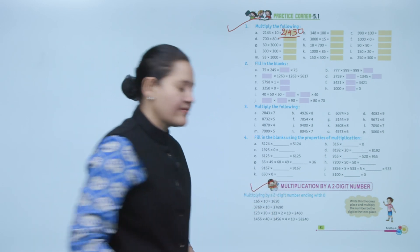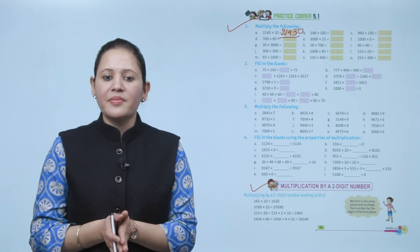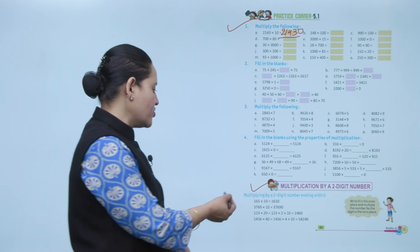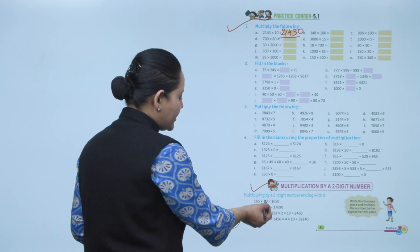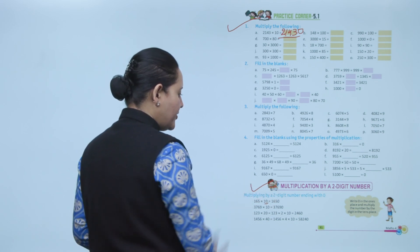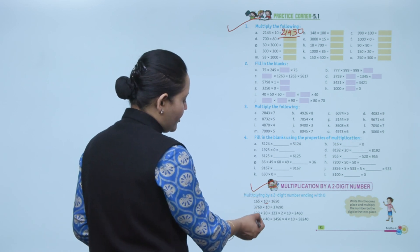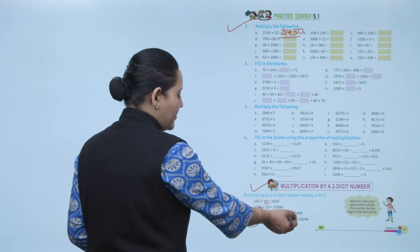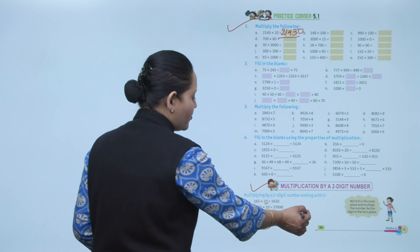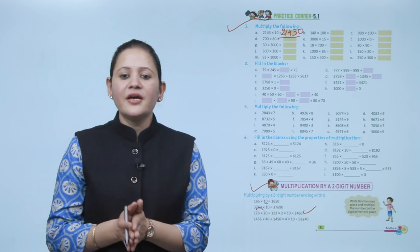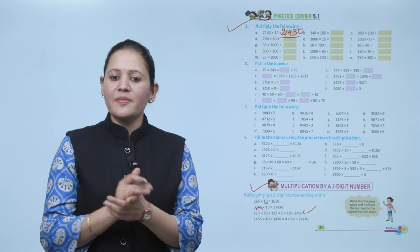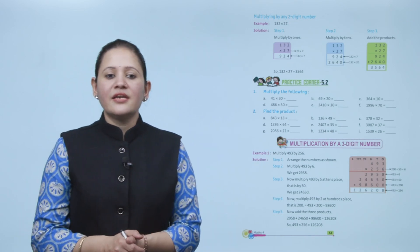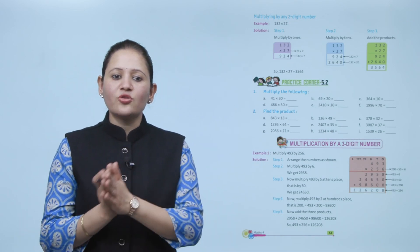Next is multiplication by a two-digit number. For a two-digit number ending with zero, like 165 into 10, the answer is 1650 because there is one zero in the multiplier. For 123 into 20, first multiply 123 by 2, then multiply by 10, so the answer is 2460. Write zero in the ones place and multiply the number by the digit in the tens place.